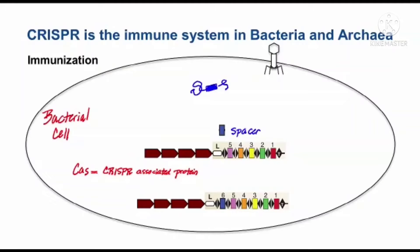CRISPR is the immune system in bacteria and archaea. The first step in the immune system is immunization. We're depicting a bacterial cell here, and inside the bacterial cell are Cas genes. The Cas genes encode a multi-subunit protein called Cas.